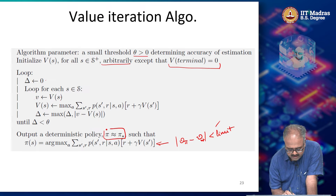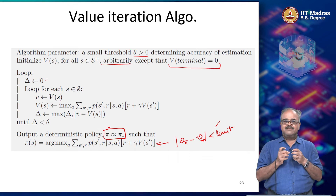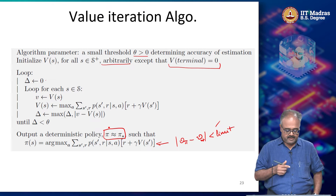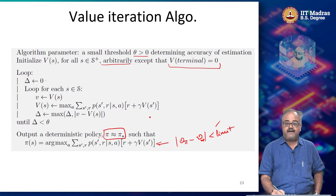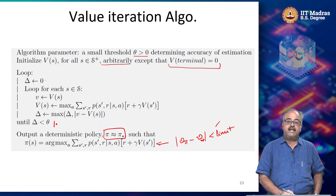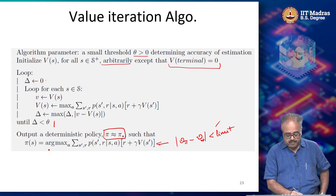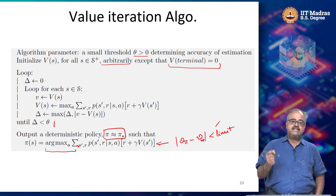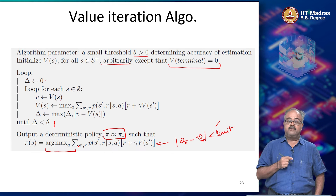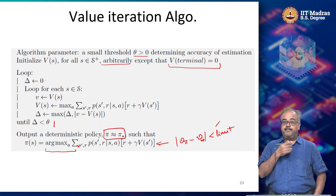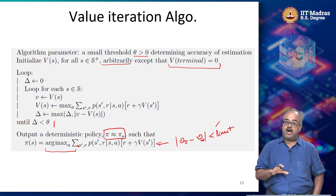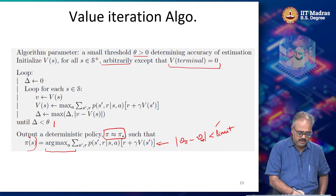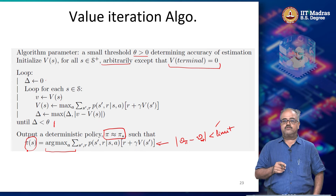You do not get pi* exactly. What you get is something very close to pi*. Once you stop — when delta is less than theta — you do one final argmax over A. This is essentially the greedification step you would have done in the policy iteration algorithm. In value iteration, you do not do a greedification step repeatedly; you do it once at the very end. That gives you a new policy pi(s) that is very close to the optimal policy.